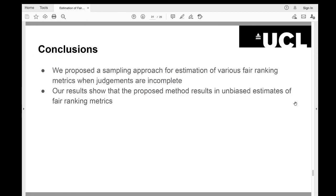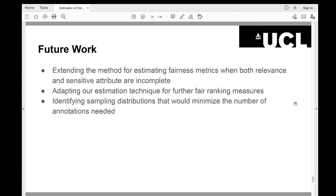In conclusion, we propose a sampling approach for estimation of various fair ranking metrics when judgments are incomplete. Our results show that the proposed method is an unbiased estimate of fair ranking metrics. As future work, we plan to extend our methods to estimate fairness metrics when both relevance and sensitive attribute information are incomplete. We may also adopt this estimation technique for further fair ranking measures. And finally, maybe we need to identify some sampling distributions that would minimize the number of annotations needed for particular fairness metrics. Remember, we were using an approach that performs well in top-heavy metrics in usual information retrieval. Thank you for your attention.